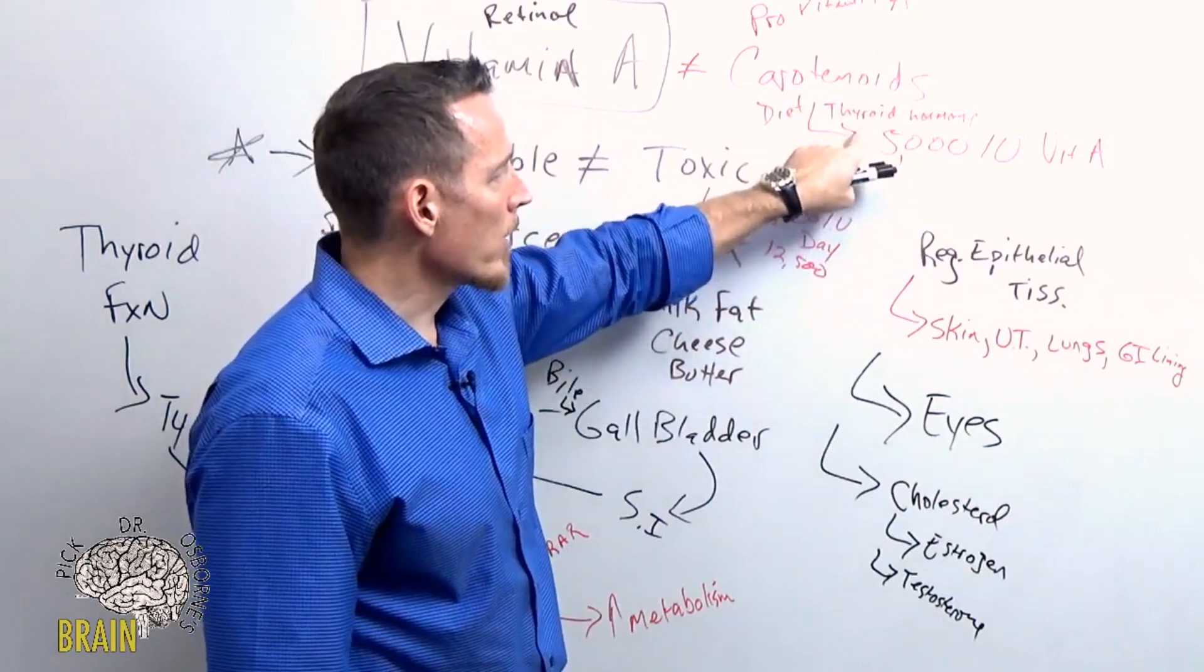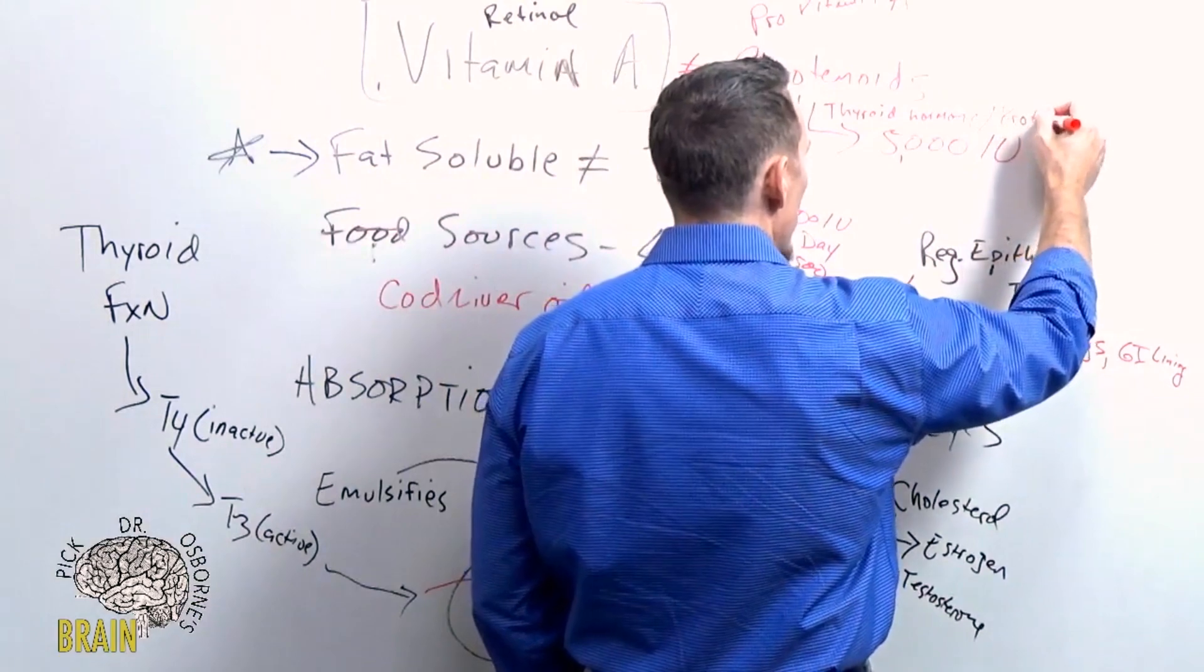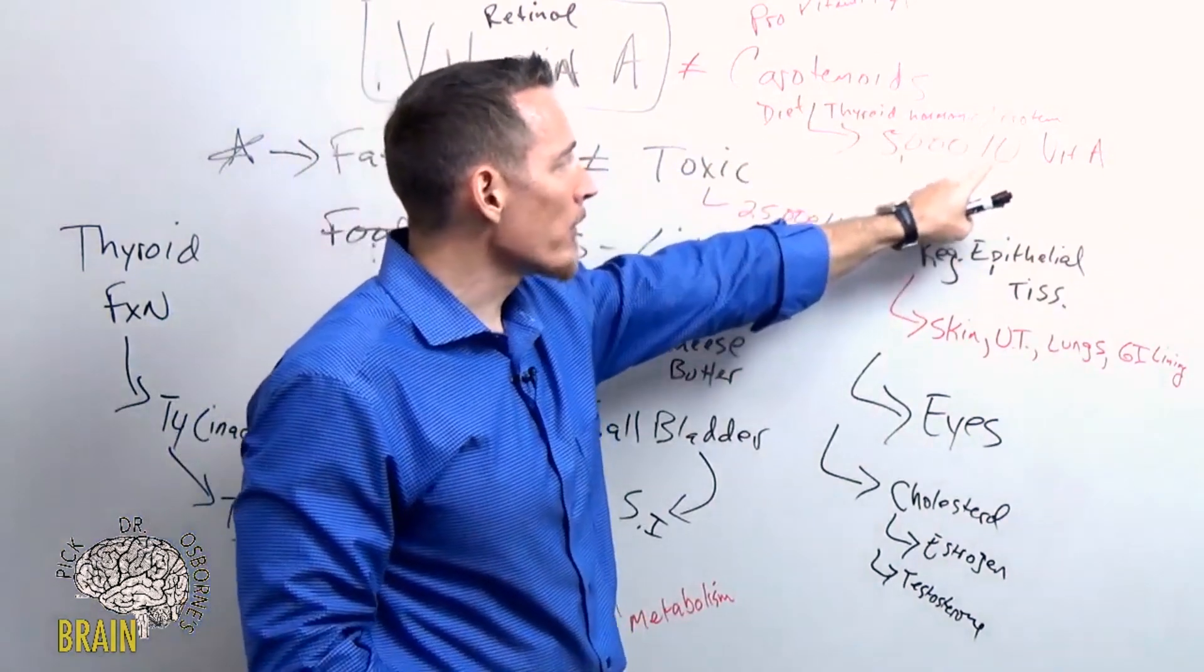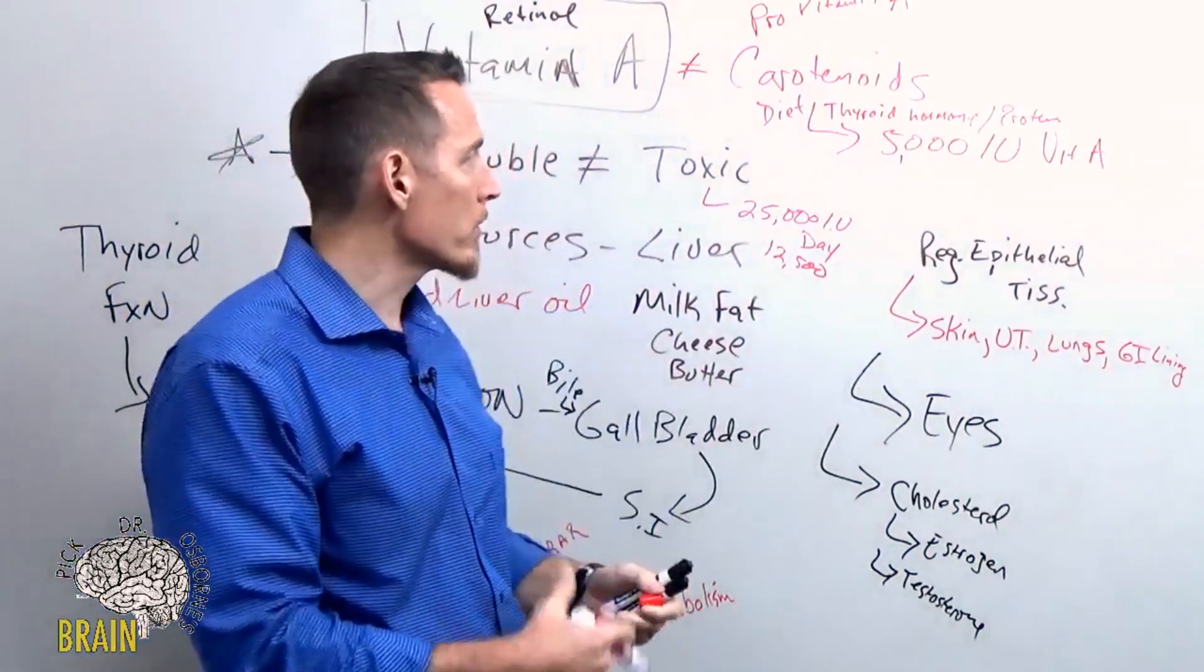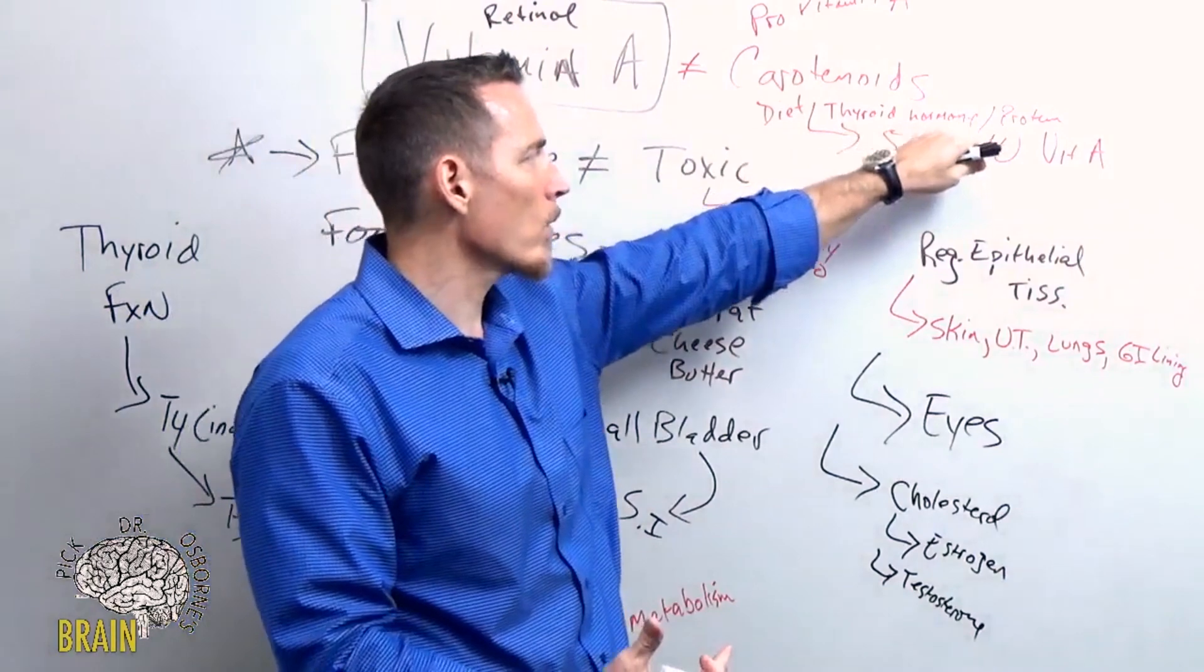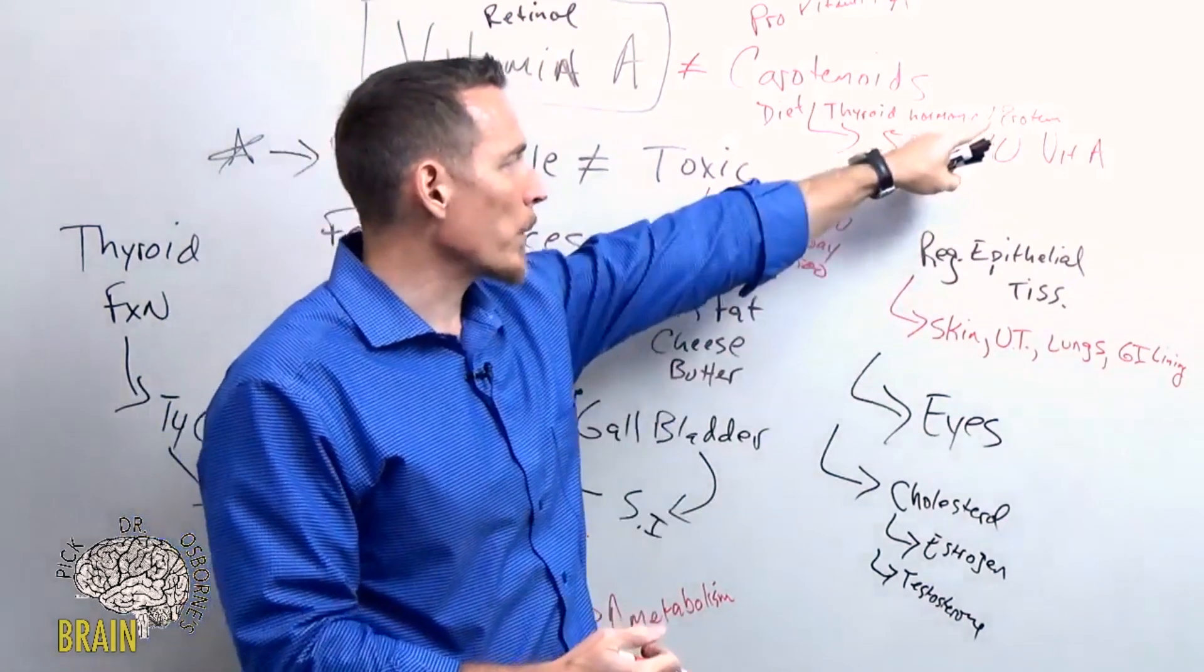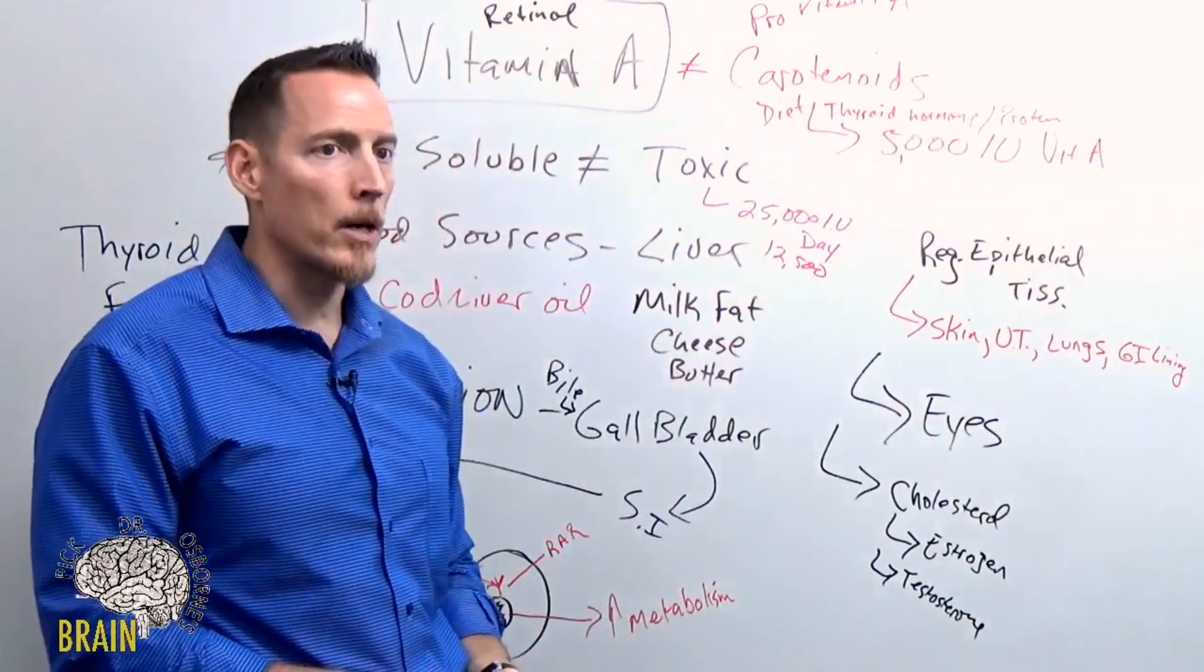Remember that this conversion requires thyroid hormone, but it also requires protein. Again, if you're a vegetarian and you're not getting adequate protein, you could be setting yourself up for vitamin A deficiency that's going to make your thyroid hormone work less effectively. You require thyroid hormone and protein to convert carotenoids to vitamin A in your gut.